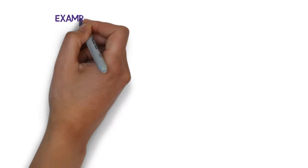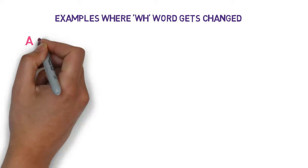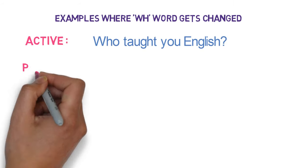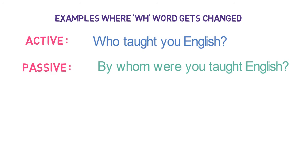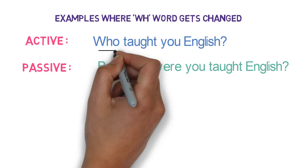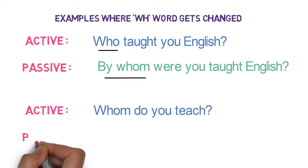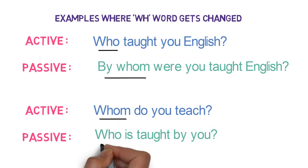Now let's look into examples where the WH word gets changed. 'Who taught you English?' — While converting it to passive, it becomes: 'By whom were you taught English?' Notice the change of WHO to BY WHOM. Next example: 'Whom do you teach?' — While converting it to passive form, it becomes: 'Who is taught by you?' Notice the change of WHOM to WHO.